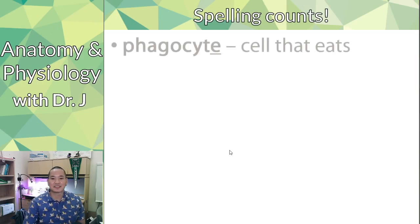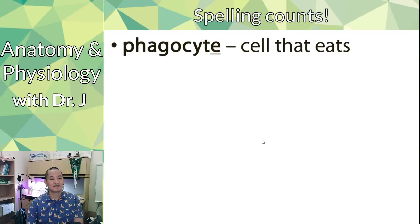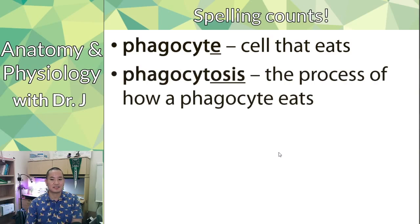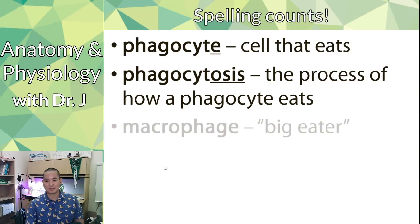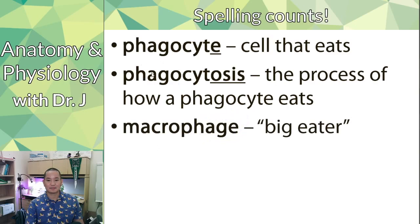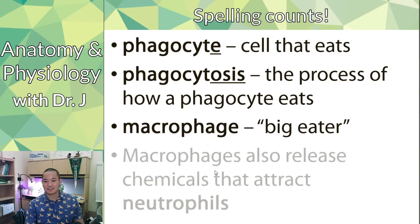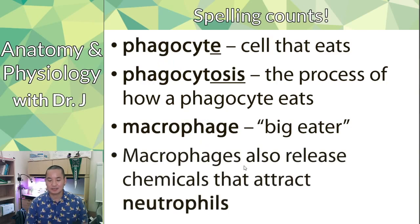And spelling counts — because phagocyte is a cell that eats, whereas phagocytosis is the process. They're related, but one is talking about a process and one is talking about a cell. Pay attention to not just the root words but also what the word ends with. Macrophage — they all have that 'phage' eat root word. And macrophages also release chemicals that attract a certain type of cell we call neutrophils.